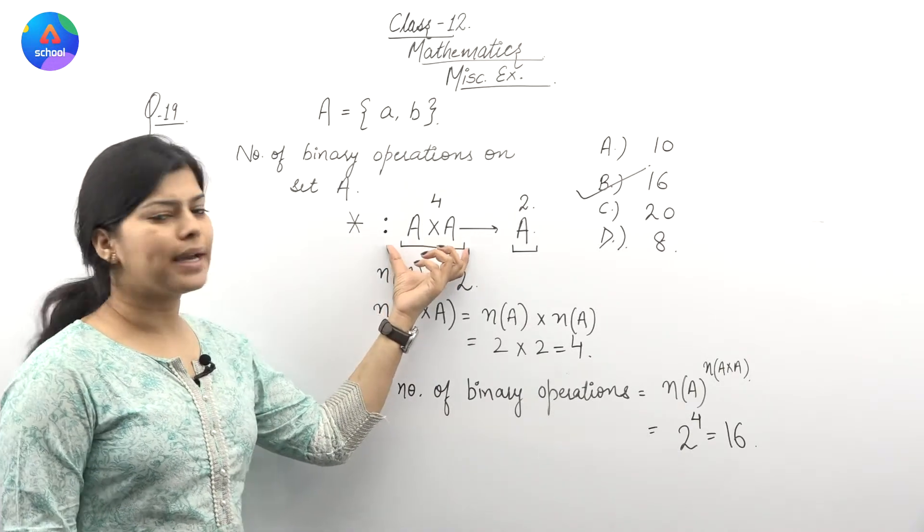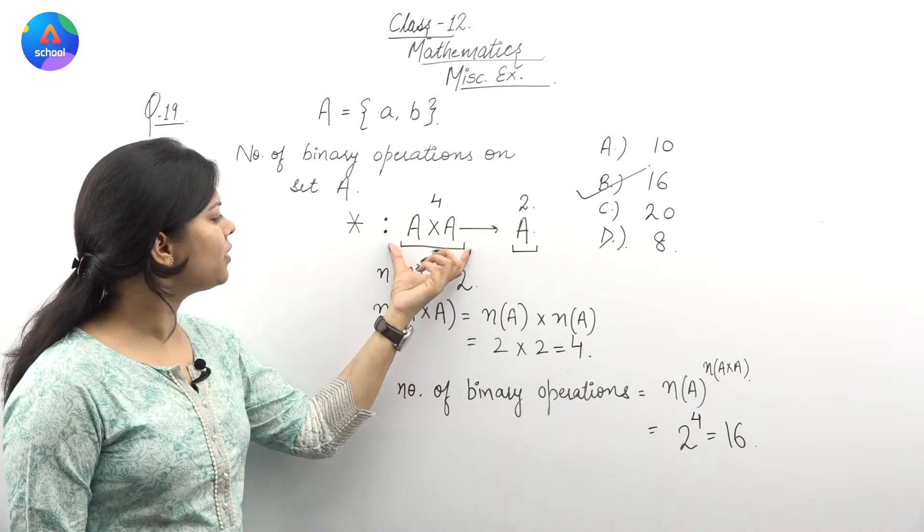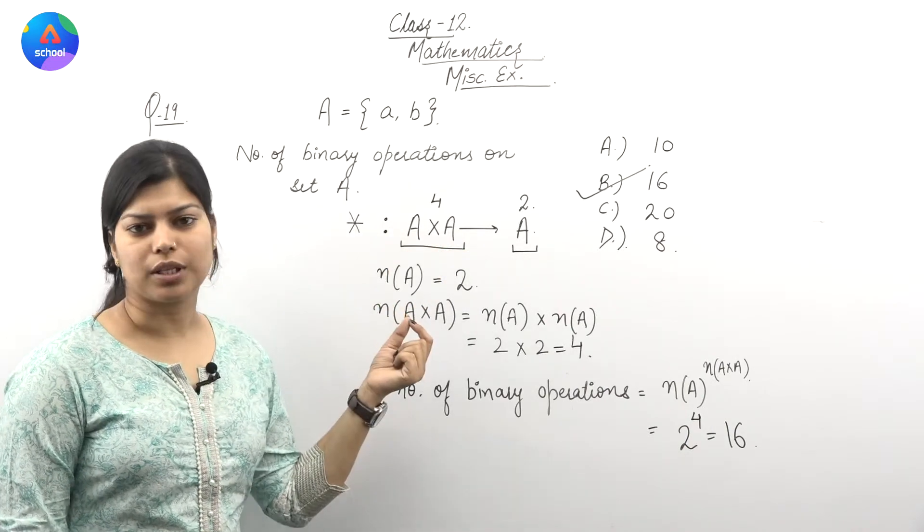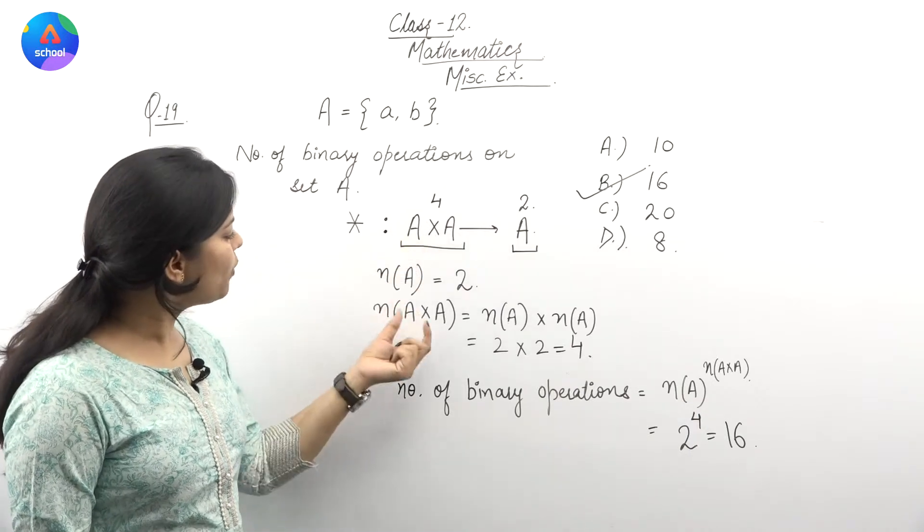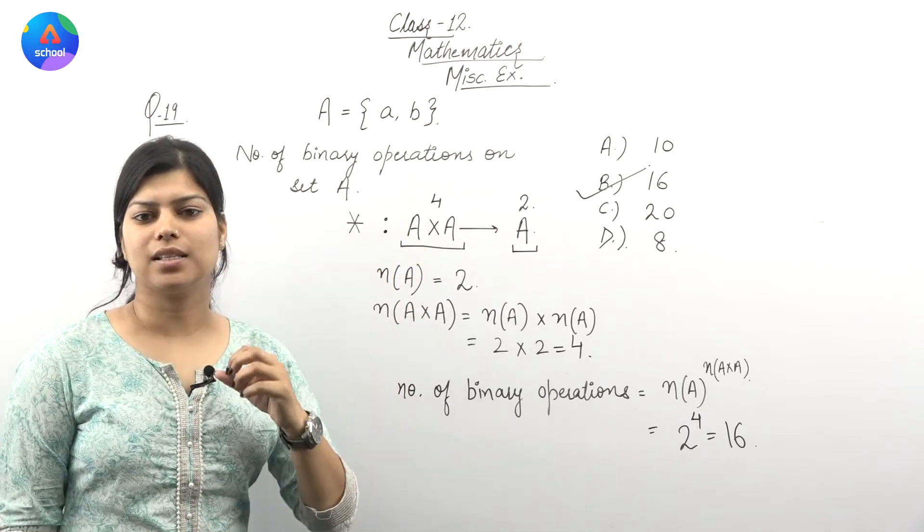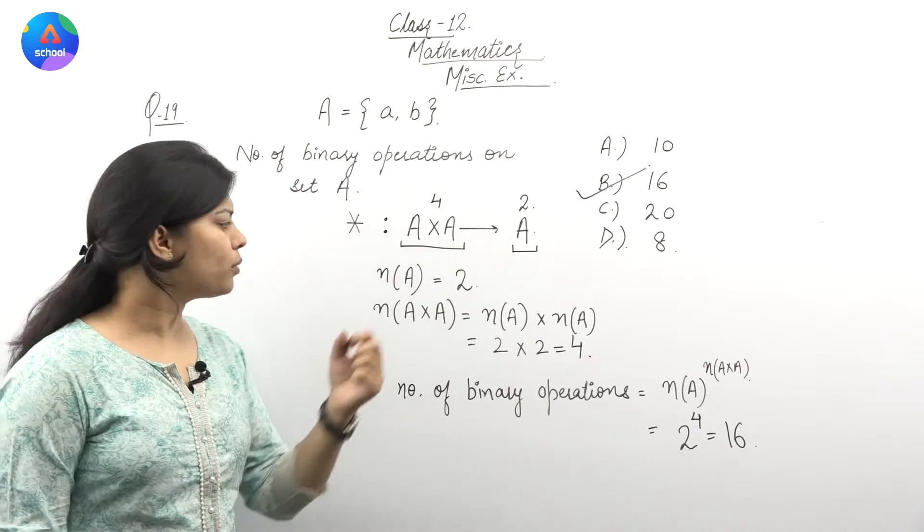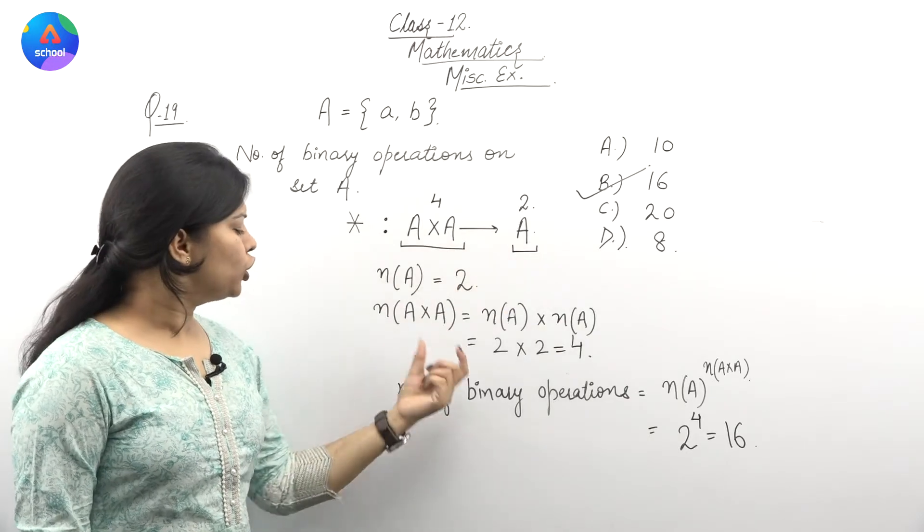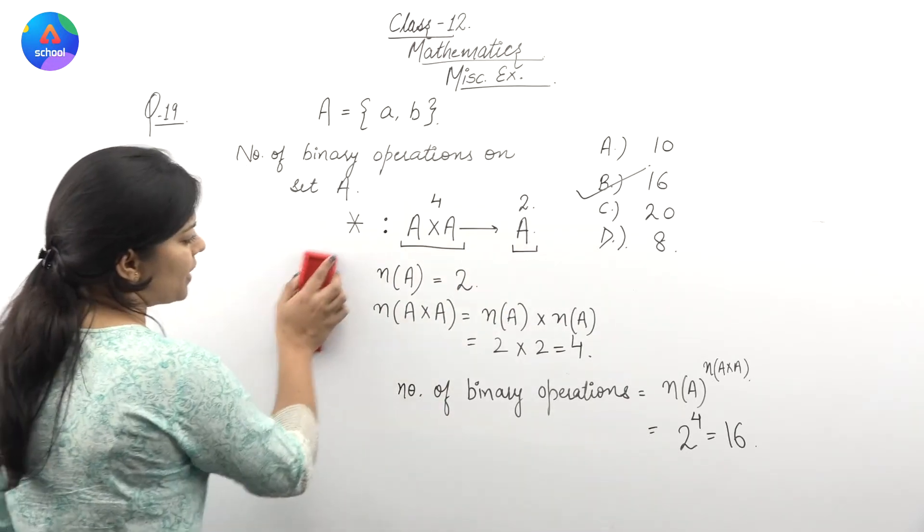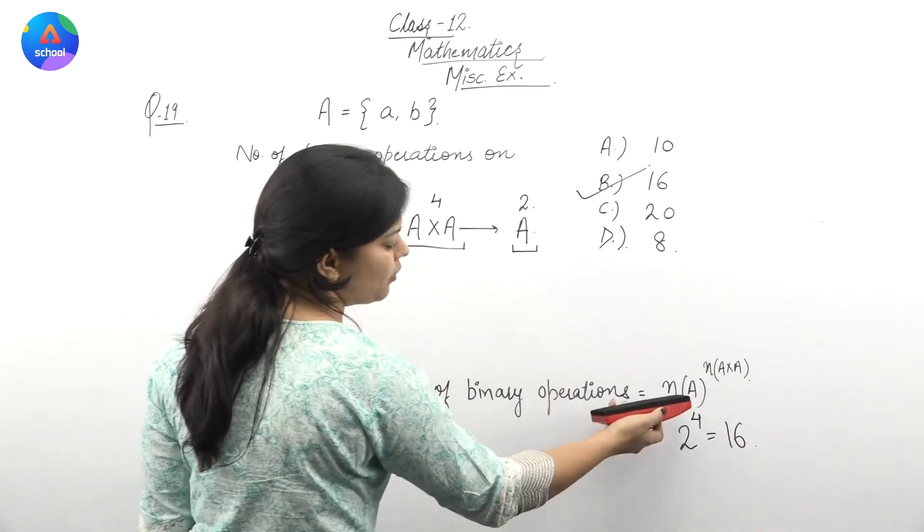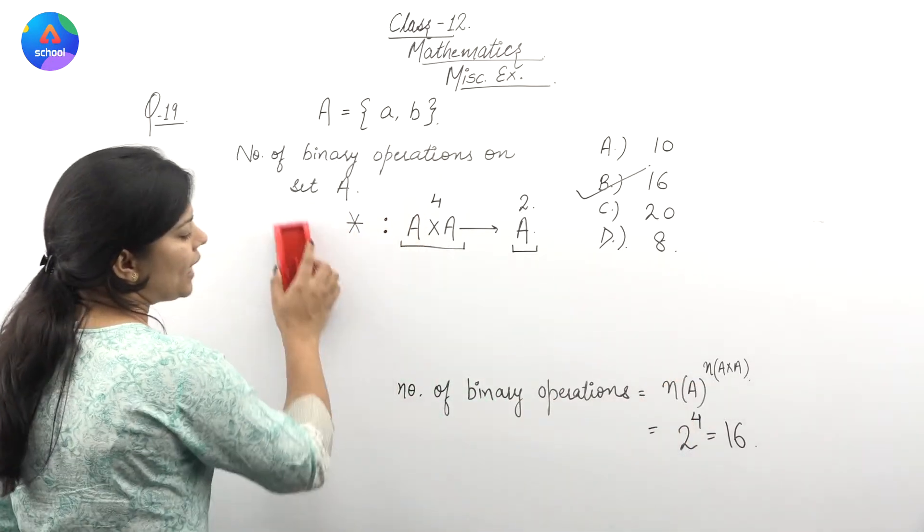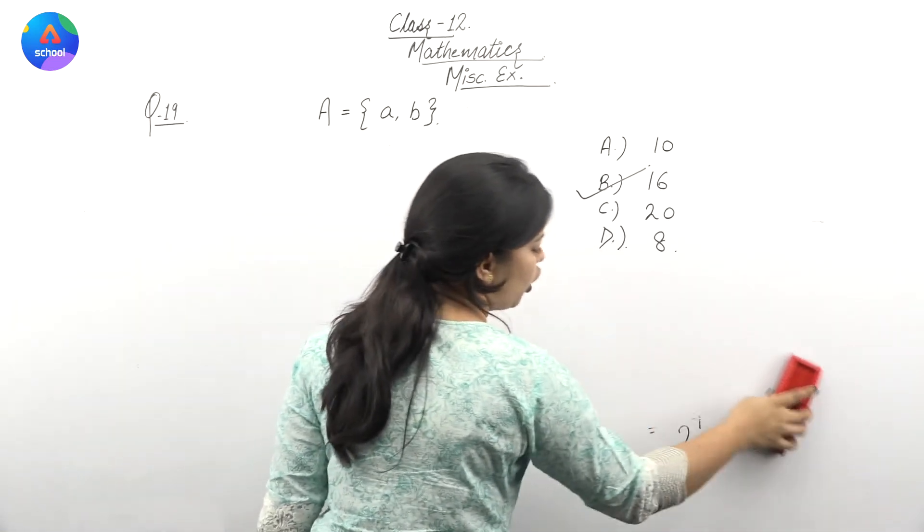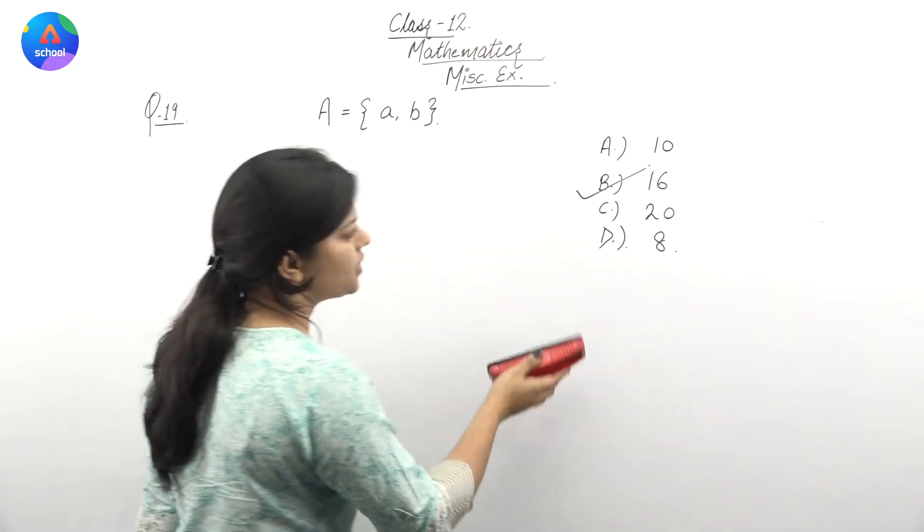Now we know that when we define a binary operation, our first set is the domain. The domain has ordered pairs. 3 times 4 equals 16.